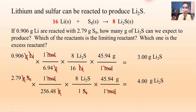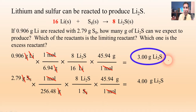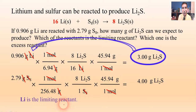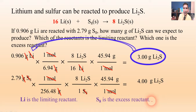So we have two answers. The question is how many grams can we expect to produce? The answer is always going to be the smaller one, so it's 3.00 grams of lithium sulfide. Now, which reactant is the limiting reactant? The limiting reactant is the one that produces the smaller amount, so that's lithium. Lithium is the limiting reactant — it's the one that runs out first — which means sulfur, S8, is the excess reactant.